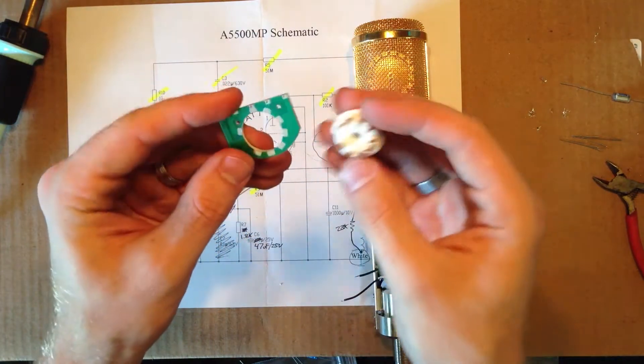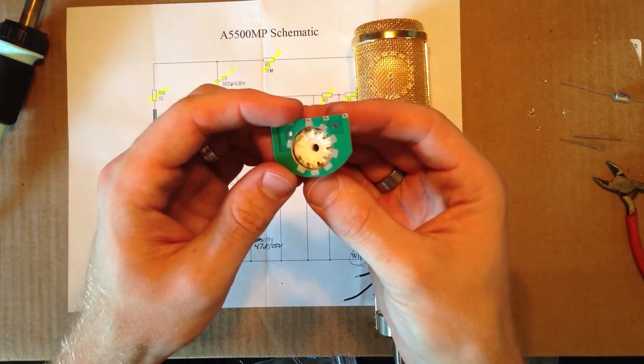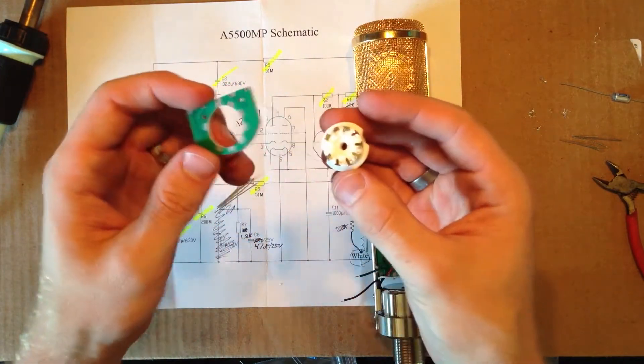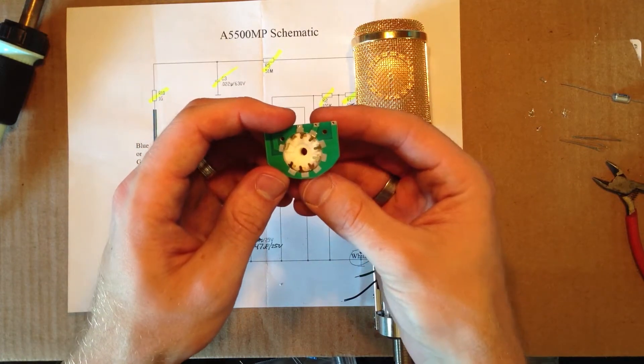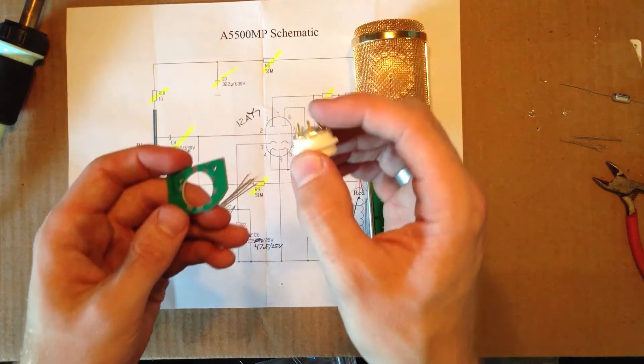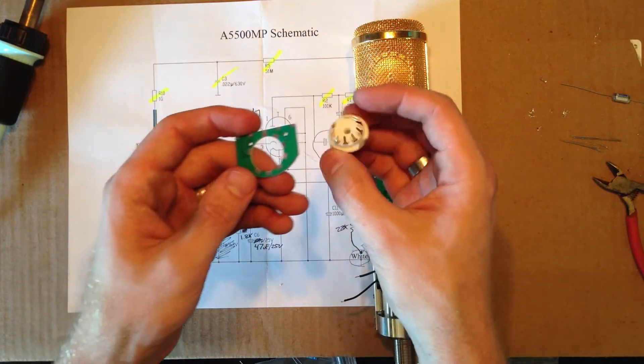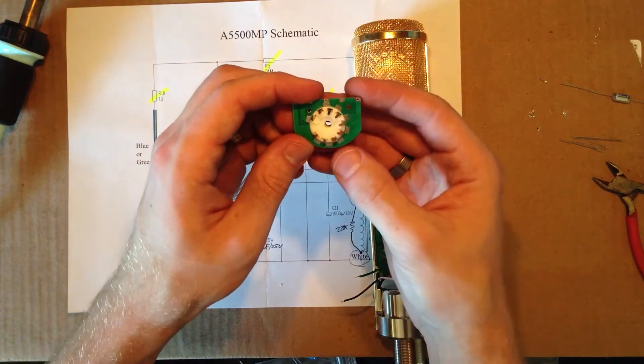Now with the tube socket itself, I'm going to show you this now, that way it'll be easier to see now rather than later. Go ahead and bend these pins in on the tube socket and then put it up through.